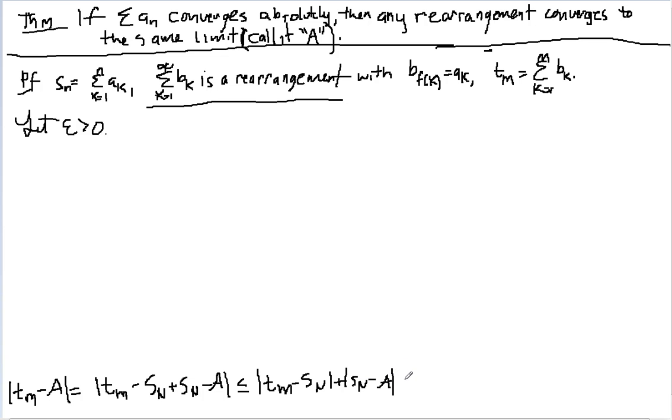Oh, and that's going to be, I have two things, so I'll make them both less than epsilon over 2. And there, my |t_n - a| is going to be less than epsilon.